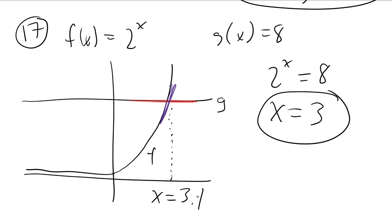So, from the graph, it might look like 3.1, but algebraically, we know that it's actually 3.